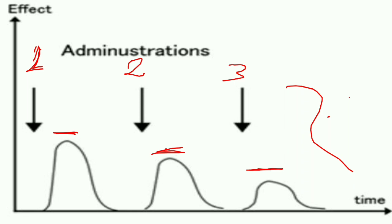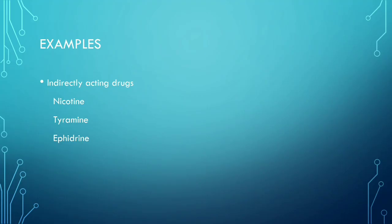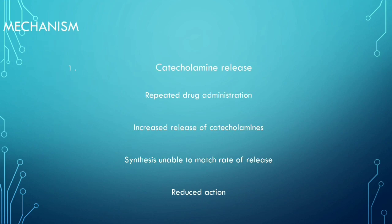This is what tachyphylaxis is. Examples of tachyphylaxis mainly include indirectly acting drugs, for example nicotine, tyramine, ephedrine, etc. Now the mechanism — here is how it works.